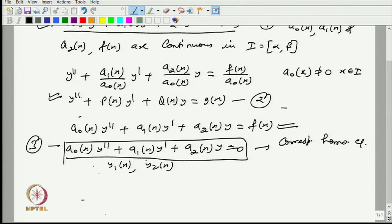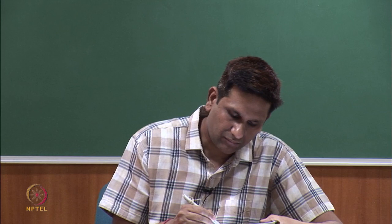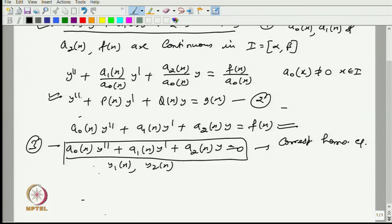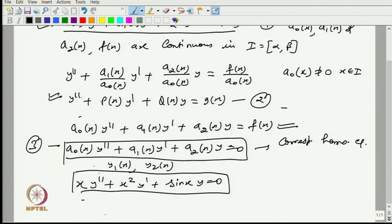The real challenge is to solve the homogeneous equation when a₀(x), a₁(x), a₂(x) are functions of x. If they are constants, we can use the characteristic equation to find linearly independent solutions. But if they are functions of x — for example, x y'' + x² y' + sin(x) y = 0 — then we need another approach, since variation of parameters requires the homogeneous solutions first.